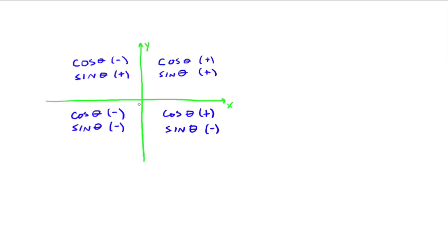In quadrant 3, cosine is negative and sine is also negative, because both x and y are negative. And in quadrant 4, cosine is positive and sine is negative. The way to remember this is: depending on which quadrant your angle is in, the signs of cosine and sine correspond to the signs of x and y. Think of x as going with cosine, and y as going with sine, in terms of whether they are positive or negative numbers.